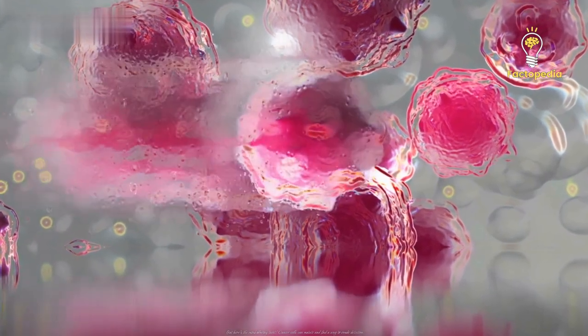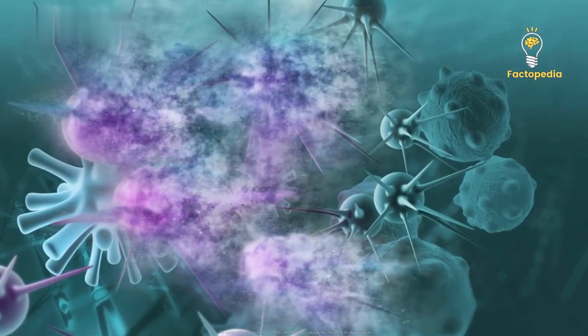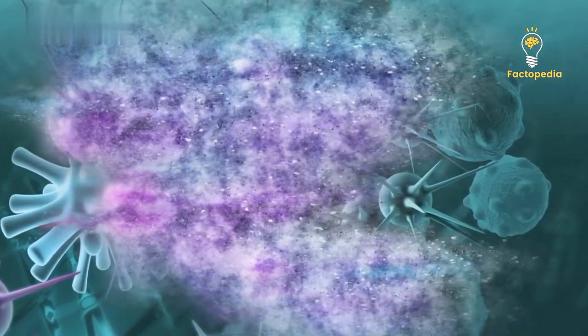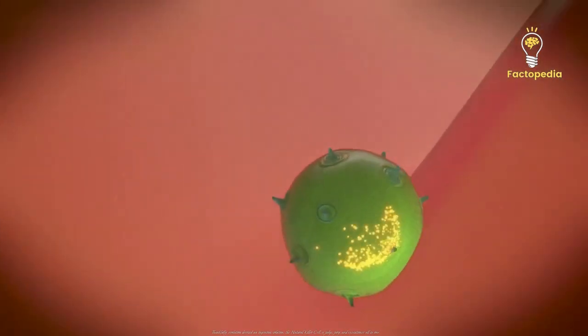Cancer cells can mutate and find a way to evade detection. By shutting down the production of MHC class 1 molecules, they become invisible to the immune system. Thankfully, evolution devised an ingenious solution. The natural killer cell, a judge, jury, and executioner all in one.